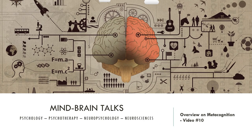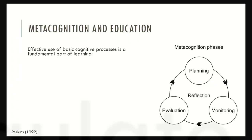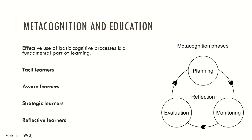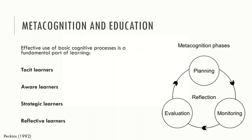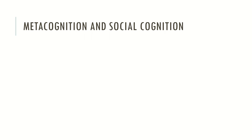We can relate metacognition with education. Looking again at the three phases — planning, monitoring and evaluation — we can see how these phases may impact the learning process. Perkins defined that children may have different learning styles: the first is tacit learners, the second is aware learners, the third is strategic learners, and the fourth is reflective learners. Metacognition may also be related to social cognition because metacognition implies the cognitive processing of the mental states, desires, wishes and behaviors of others. That's why cognitive psychology and social cognition are very interested in metacognitive processes.